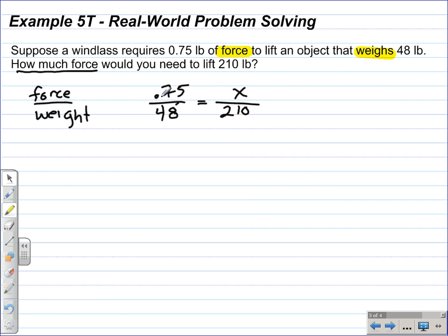210 times 0.75 is 157.5. And that is equal to 48x. Dividing each side by 48, we get x is equal to 3.28125.